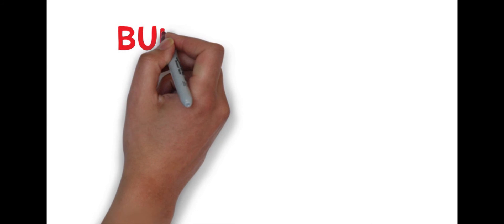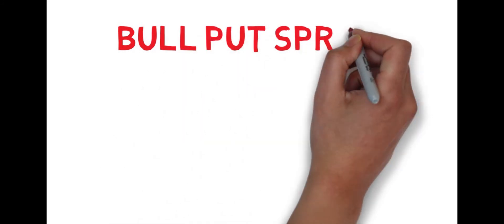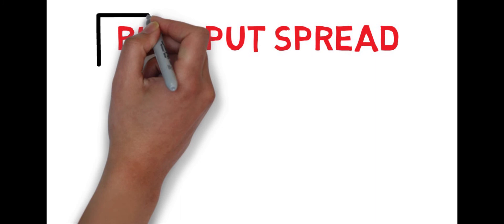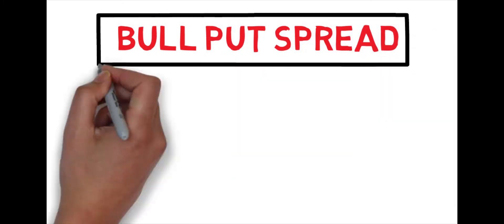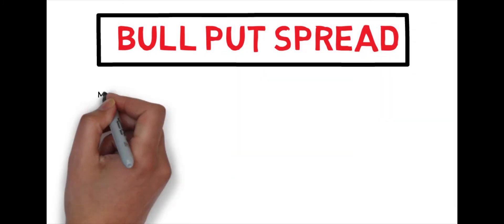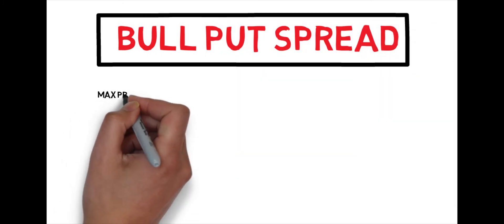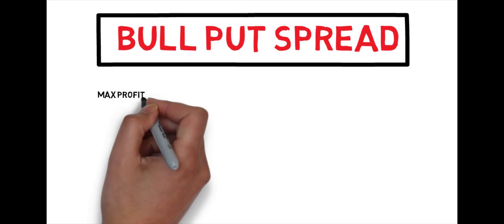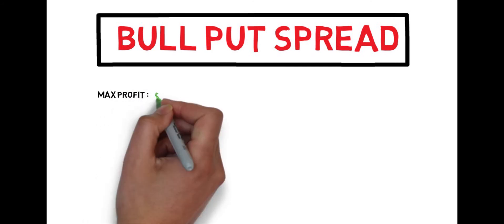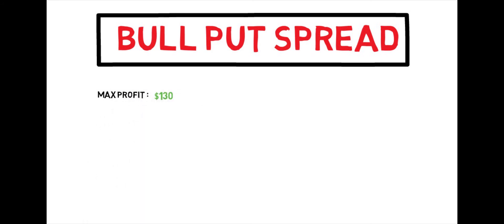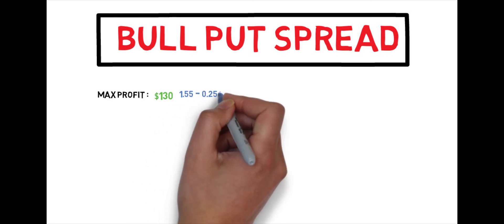Alright, welcome to the explanation part of this option trading strategy. So first things first, let's go over the basics. Let's go over the max profit. The max profit is basically going to be your total credit. Your total credit was 1.30 times 100, so $130 is your max profit.